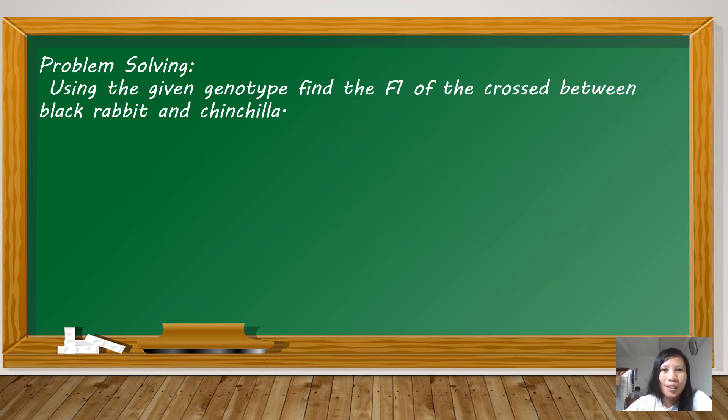Let us move on to the problem solving. Given the genotype, find the F1 of the cross between black rabbit and Chinchilla. I got this from a module in grade 9. Let's do it. First, let's look at the given. Black rabbit and Chinchilla. What we're looking for is the F1 generation, the first filial generation. That will be the first batch of offspring from these two.